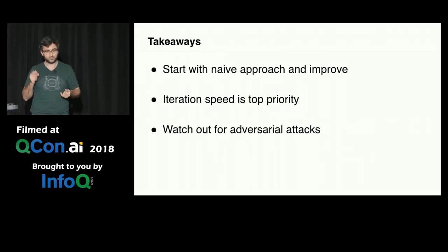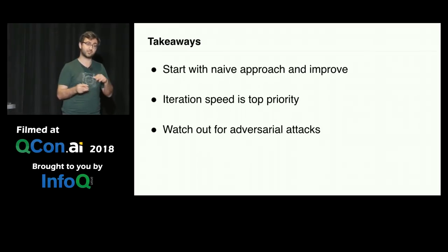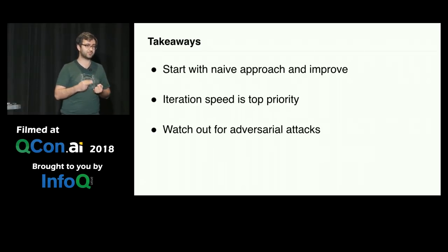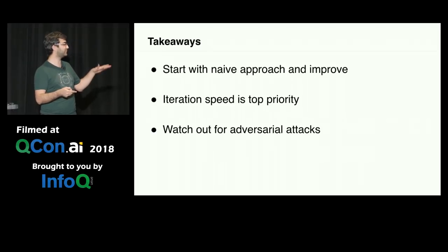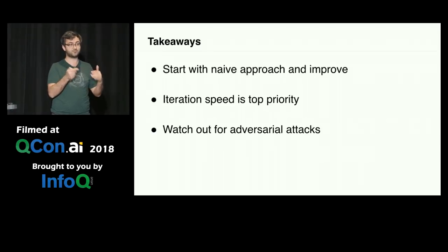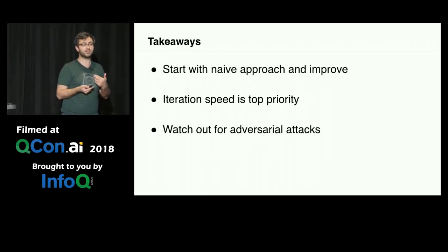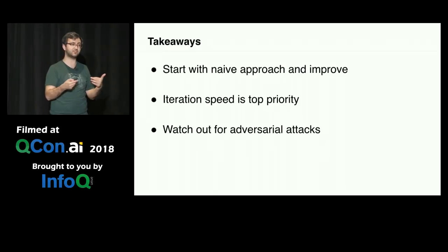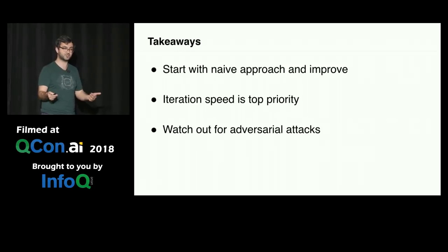Some takeaways: it's very important to start with a naive implementation — like our attempt one — and then build up from there for the more complicated solutions. It gave us a lot of speed for our iteration. Finally, these attacks are getting very complicated. We have not addressed adversarial attacks yet, but because of the accessibility of these models, it's very easy to build your own adversarial networks and generate fake identities. We still need to think about how to solve the problem of fake-generated identities.